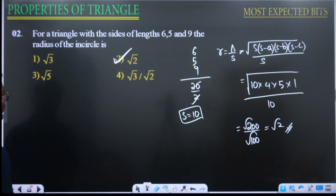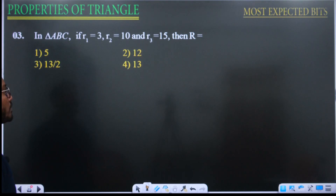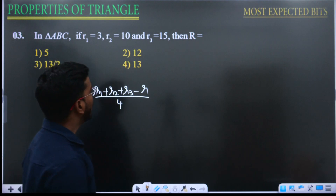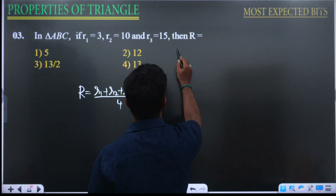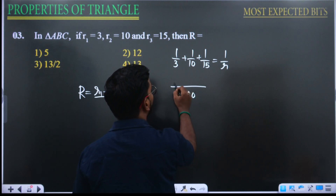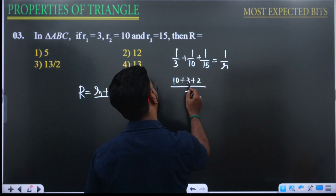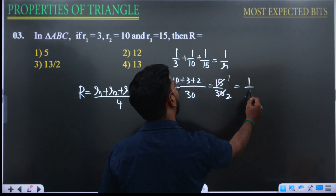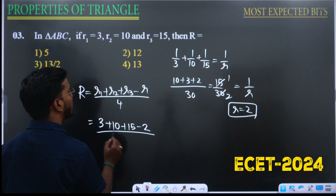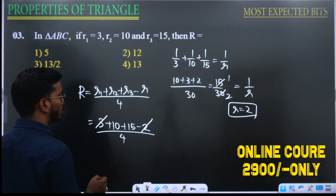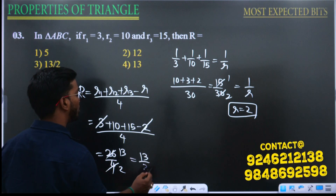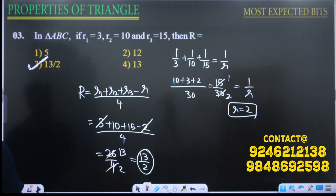Next question: r1, r2, r3 are given, find circum-radius R. Formula: R equals (r1 plus r2 plus r3 minus r) divided by 4. First find r using 1/r1 plus 1/r2 plus 1/r3 equals 1/r. With r1 equals 3, r2 equals 10, r3 equals 15: LCM is 30, giving (10 plus 3 plus 2)/30 equals 15/30 equals 1/2, so r equals 2. Then R equals (3 plus 10 plus 15 minus 2)/4 equals 26/4 equals 13/2.